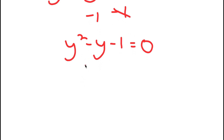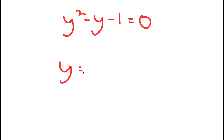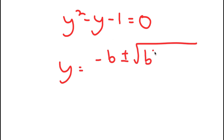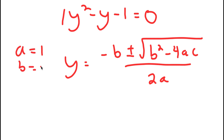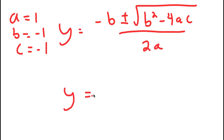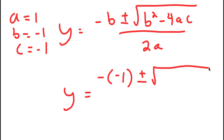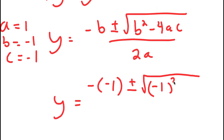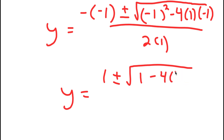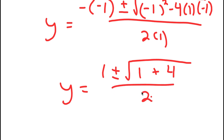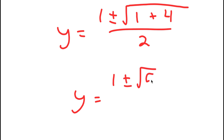This is a quadratic equation, so I'm going to use the quadratic formula: negative b plus or minus the square root of b squared minus 4ac, all over 2a. In this case a is 1, b is negative 1, and c is negative 1. So y equals negative of negative 1, plus or minus the square root of (negative 1) squared minus 4 times 1 times negative 1, all over 2 times 1. This simplifies to 1 plus or minus the square root of 1 plus 4, all over 2, which is 1 plus or minus the square root of 5, all over 2.